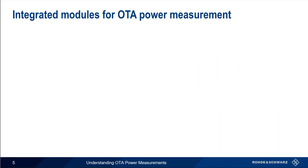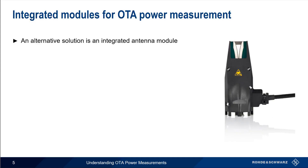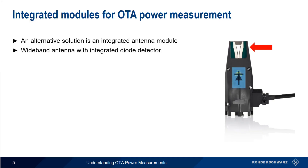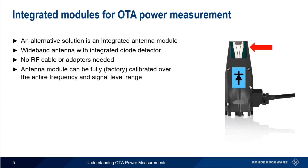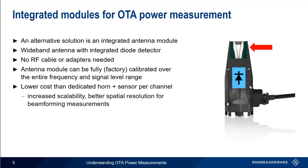An alternative approach for OTA power measurements is to use a so-called integrated antenna module. In an integrated module, a wideband antenna is combined with an integrated diode detector so that power is measured directly at the antenna, with no need for RF cables or adapters. The module output is a non-RF analog signal. Furthermore, an integrated antenna module can be fully calibrated at the factory over its entire frequency and level range, removing the need to perform system calibrations. These integrated modules are also significantly less expensive than having a horn antenna and sensor per channel, which increases scalability and allows better spatial resolution in beamforming measurements.